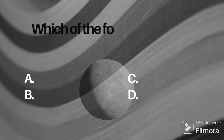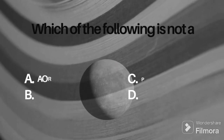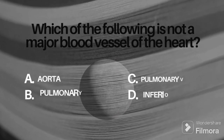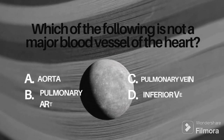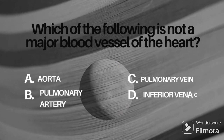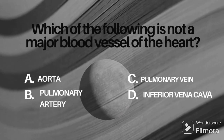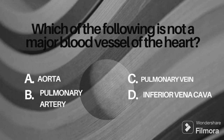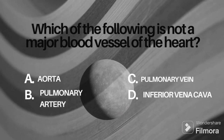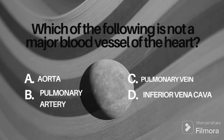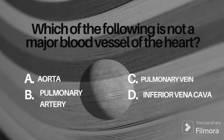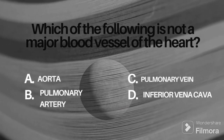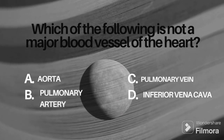Question 6: which of the following is not a major blood vessel of the heart? Option A: aorta, B: pulmonary artery, C: pulmonary vein, D: inferior vena cava. Please go through the question properly and give your right answer in the comment box.